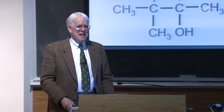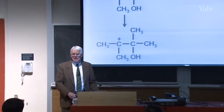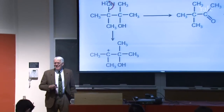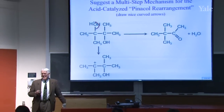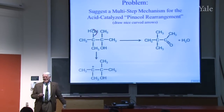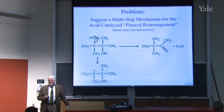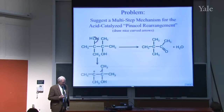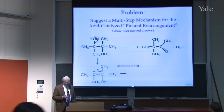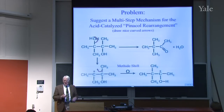Now what did anybody think about the next step? I thought that maybe there was a methide shift. Methide shift—good. So the methide could shift over in a rearrangement, and now you have this cation.